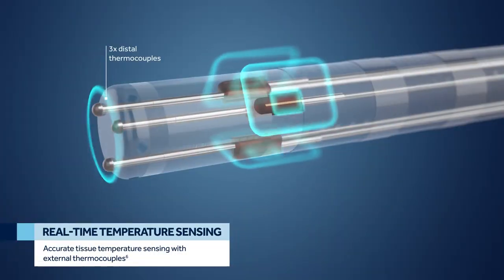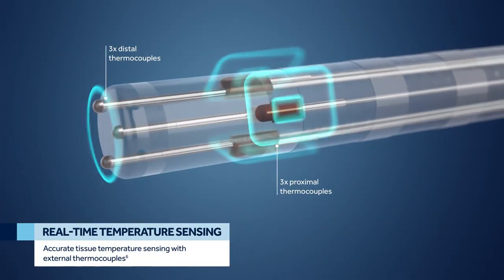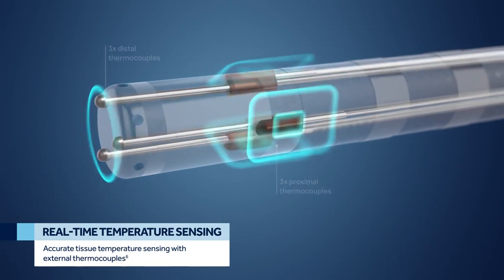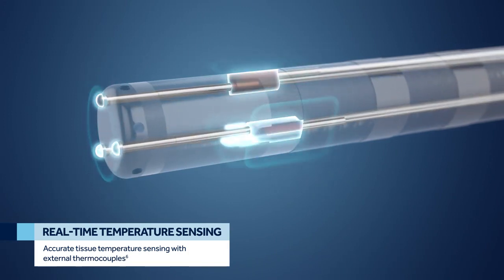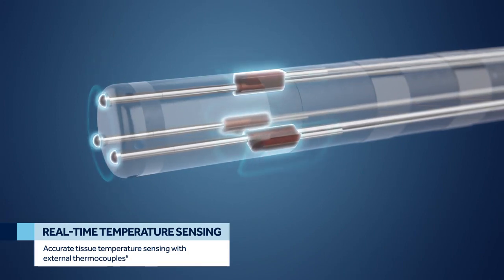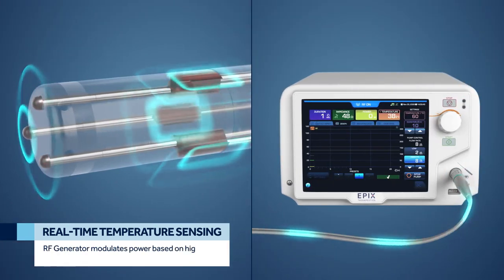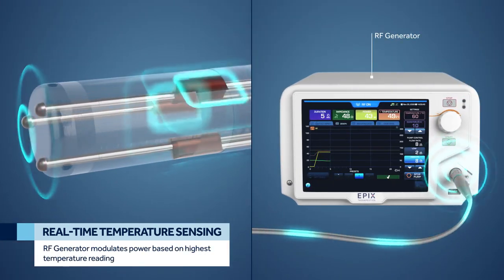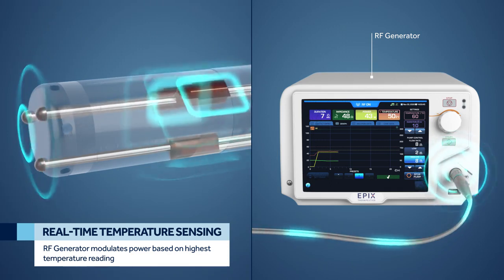The Diamond Tip ablation system automatically adjusts power to maintain therapeutic ablation temperature in real-time. Six external thermocouples measure tissue surface temperature every 20 milliseconds. The RF generator then modulates power based on the highest temperature reading to maintain target temperature during ablation.